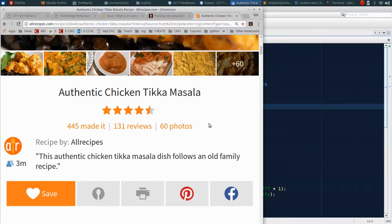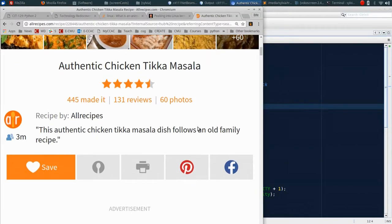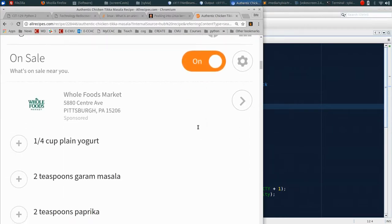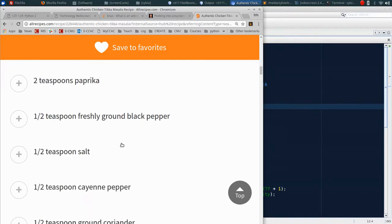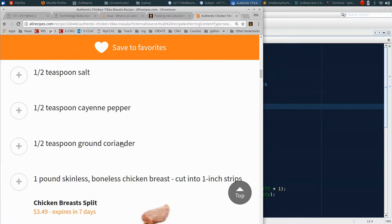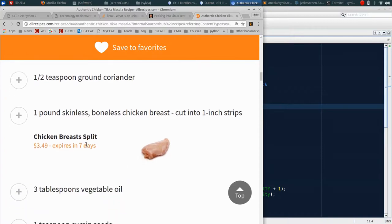So chicken tikka masala, a classic recipe involves a couple of different components. The first is a list of ingredients. You'll notice classically an Indian dish has plain yogurt, a bunch of different spices, garam masala, paprika, black pepper, salt, cayenne pepper, coriander, and here's our meat, one pound skinless boneless chicken breast cut into one inch strips. And look at that nice add and that tasty looking piece of chicken.